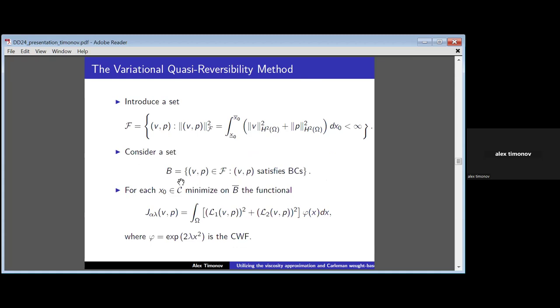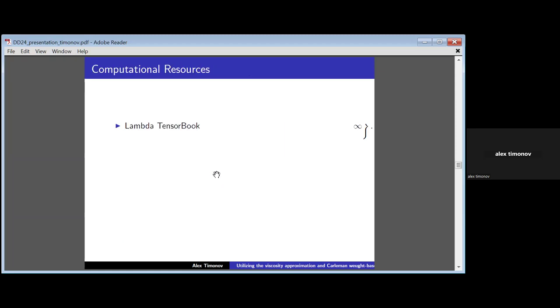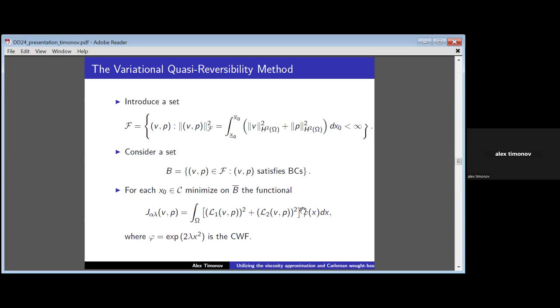We determine a certain set B, which gives us a certain constraint on the unknown v and p, and derive a functional to be minimized on this set. Notice the functional. The functional is the sum of L2-squared of two operators times Carleman weight functions. This means it's very important that this functional allows us to introduce Carleman weight functions. Why? Because, as I said, the problem is still ill-posed, and we have to ensure stability and convergence of the minimizer to ground truth image.